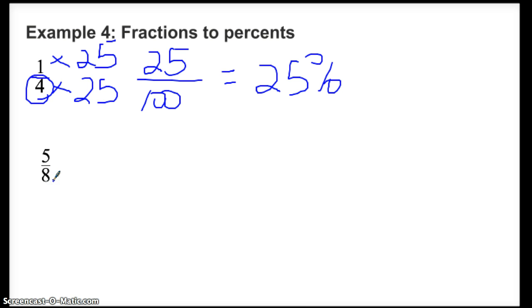8, however, doesn't do that. So you kind of have to do it the long way. So we have to find the decimal equivalent, and then we take that decimal and turn it into a fraction, and then try to simplify it to a denominator with 100. So it's a bit time-consuming, but it can be done. So if we divide 5 by 8, 5 divided by 8, we get 0.625.